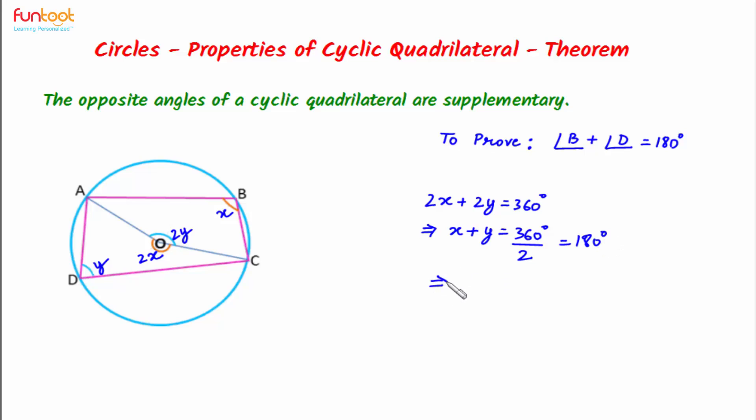And this is what we have to prove here. So here X is angle B and Y is angle D. This is equal to 180 degrees.